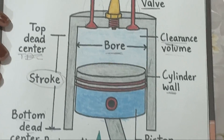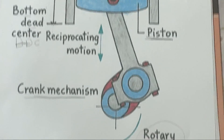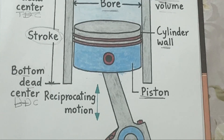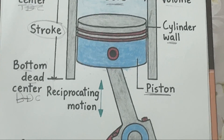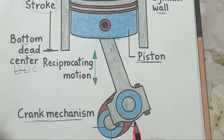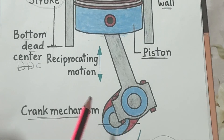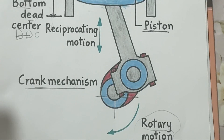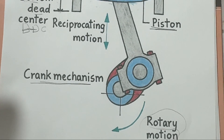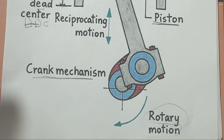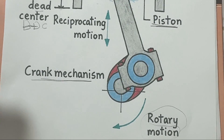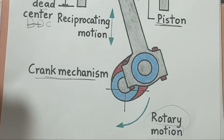Here is the key concept: the piston performs reciprocating motion — it moves up and down. The crankshaft converts that into rotary motion, a spinning movement. That's how linear motion from fuel combustion becomes rotational motion that drives your wheels, fans, or generators.